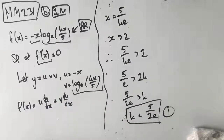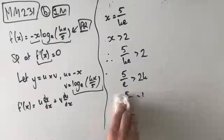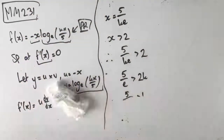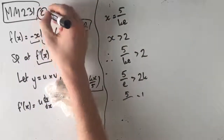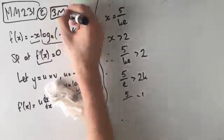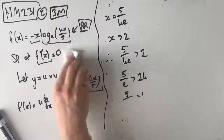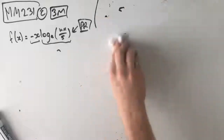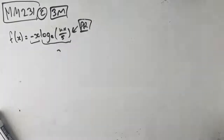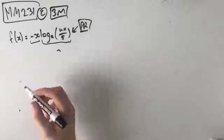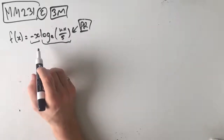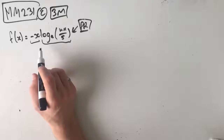Let's move on to part c. Part c says: when k equals a, the tangent to the graph of f at x equals 1 passes through the point negative 1, 0. Find the value of a. Part c is 3 marks.